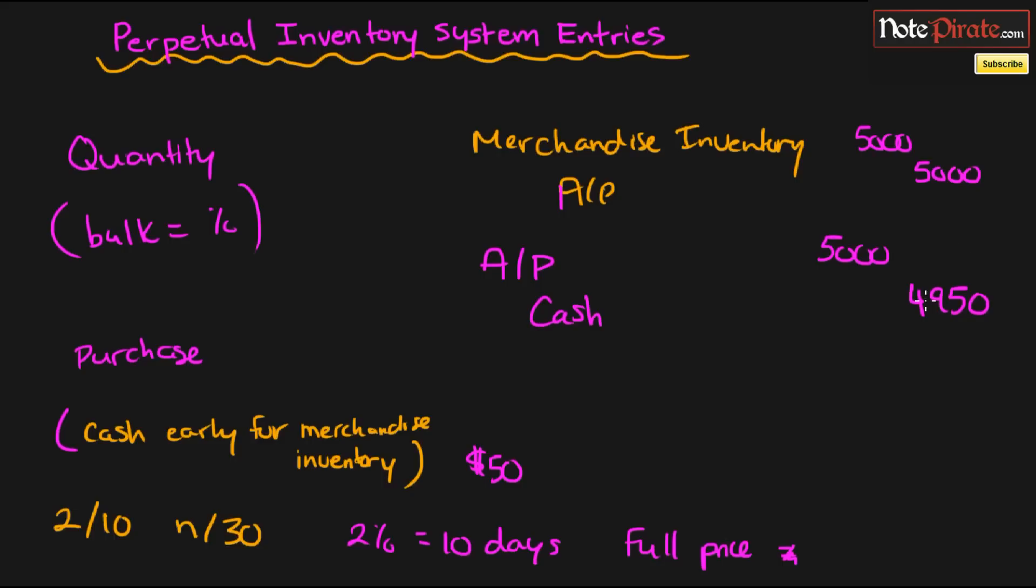And look, we have an imbalance here, right? We can't have a debit for $5,000. We have to make this balance. So the last one, of course, is what I said, which means merchandise inventory shows up in all transactions on the purchasing side. So merchandise inventory is going to be credited for $50.